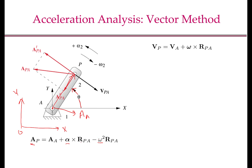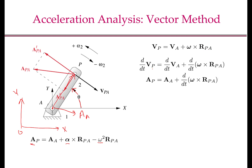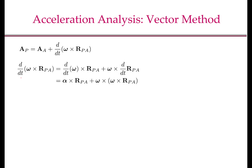To derive this expression, we start with the velocity equation: VP equals VA plus omega cross RPA. Taking the time derivative: d/dt of VP equals d/dt of VA plus d/dt of (omega cross RPA). Here, d/dt of VP is the acceleration of P (AP), and d/dt of VA is the acceleration of A (AA). For the last term, since the product rule applies to vector cross products, d/dt of (omega cross RPA) equals d/dt(omega) cross RPA plus omega cross d/dt(RPA).